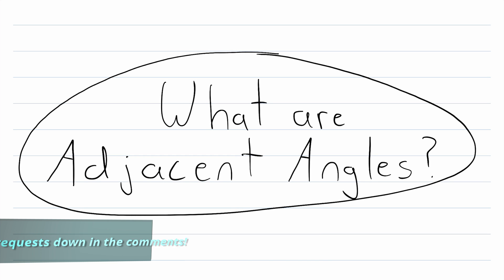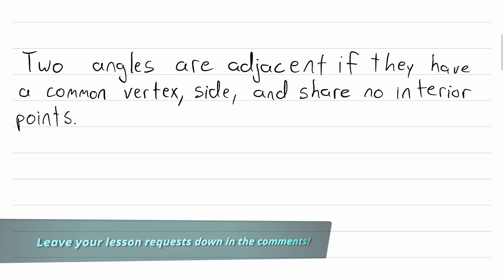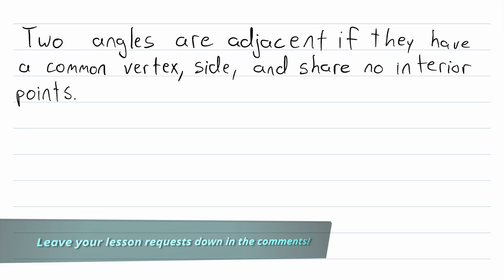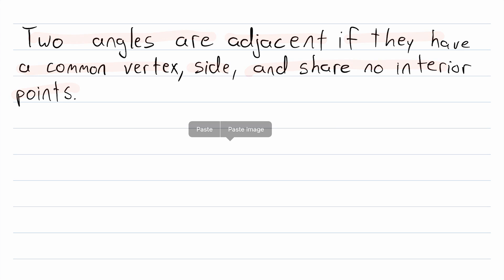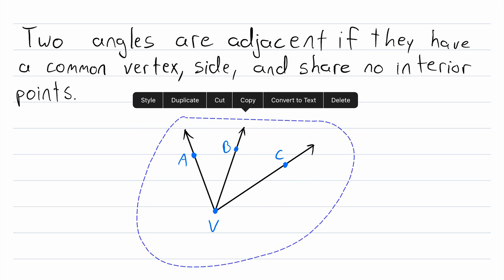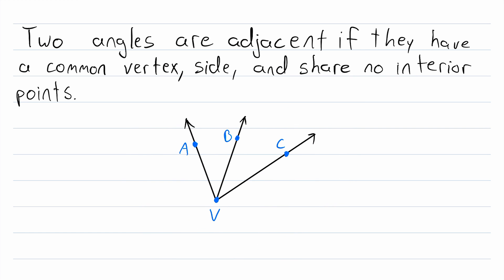What are adjacent angles? That's what we'll be going over in today's Wrath of Math lesson. Right here we have our definition: two angles are adjacent if they have a common vertex, a common side, and share no interior points. So let's check out an example of adjacent angles, and then we'll look at some non-examples.